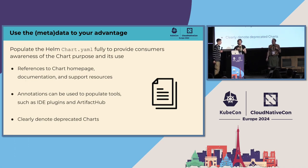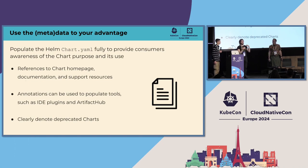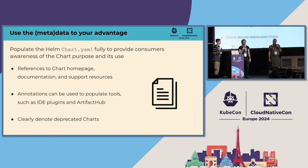My favorite annotation is the git repo link. The reason is there are people who want to contribute to your chart. If someone finds it and doesn't know where the source repo is, a lot of people are impatient — they'll just fork it and make their own changes, and any improvements they add won't get back into your chart. So please do link your source repository.